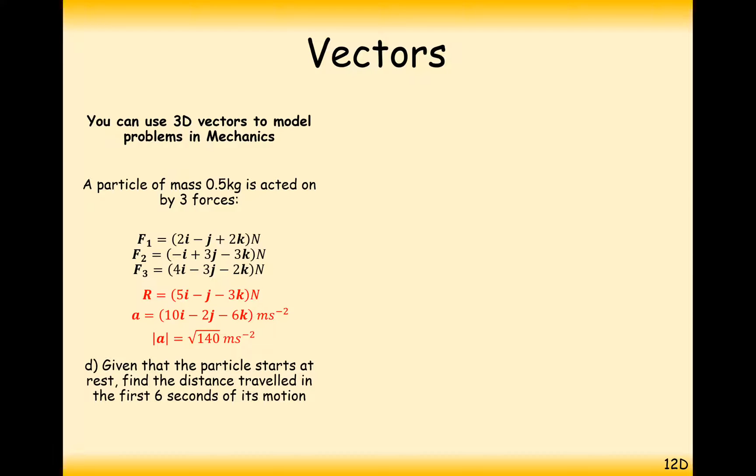Part D, given that a particle starts from rest, find the distance travelled in the first 6 seconds of its motion. So we can link this all back into SUVAT now. We know that it starts from rest, we know it has acceleration of square root 140, and we know it travels for 6 seconds. So what formula links S and this together? We don't need V. S equals UT plus half AT squared.